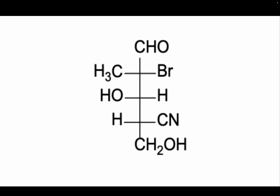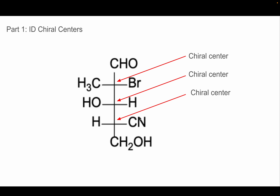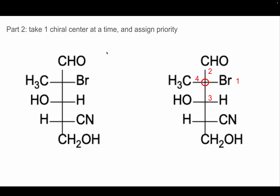Next we're going to look at Fischer projections. These are quite simple. Anytime we want to identify the chiral centers, we just look at where the vertical line intersects with the horizontal line — right here, here, and here. So these are our three chiral centers. We want to go one chiral center at a time and assign priority. For this video I'll only work through one of these chiral centers for the explanation, and the other two answers are there if you want to do them on your own.